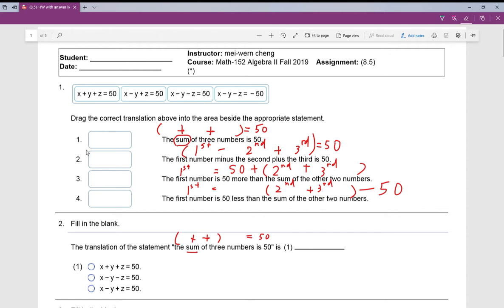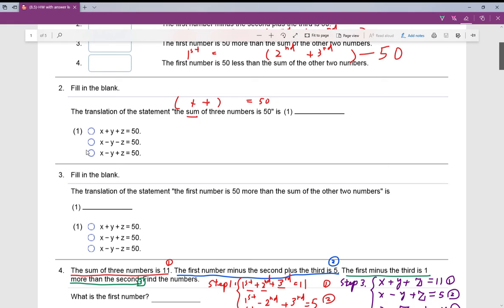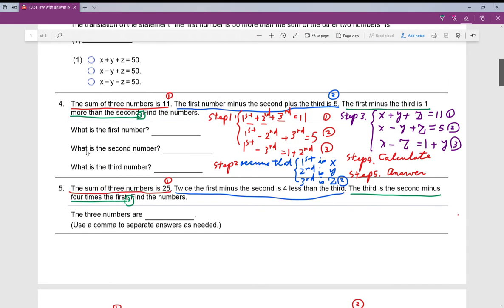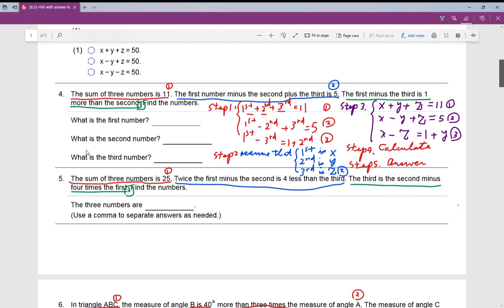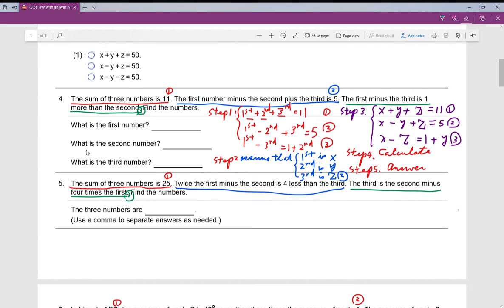So first question, you just have to translate. I show my work here. You can translate sum means addition. Number 4, I show my step 1, step 2. Now pay attention here: step 1 according to the equation 1, 2, 3, and then step 2 according to the very last sentence, find the numbers. So you have assumed the numbers are x, y, z.